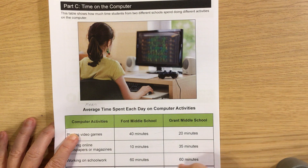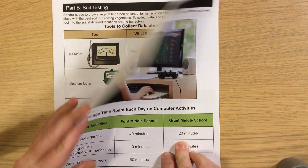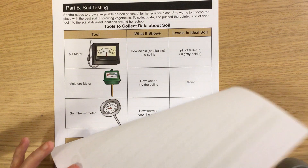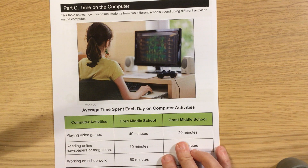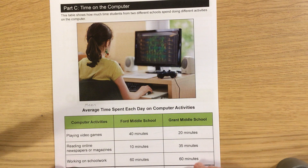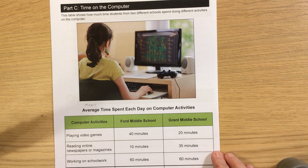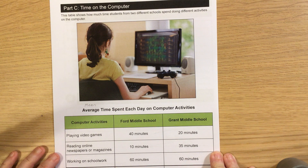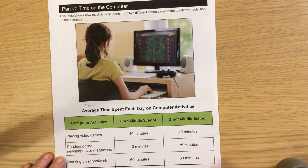We are going to look at two different writing prompts for grades 6 to 8: this one here, 'Time on the Computer,' and this one here, 'Soil Testing.' When we look at these, we are going to think about how we can turn this information into a four square to help us plan for the writing. When writing in English, we really like to use the number three.